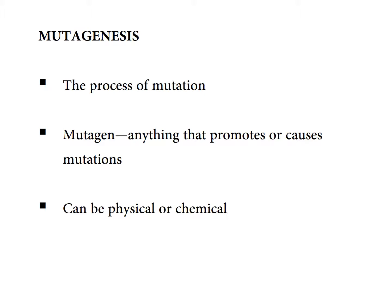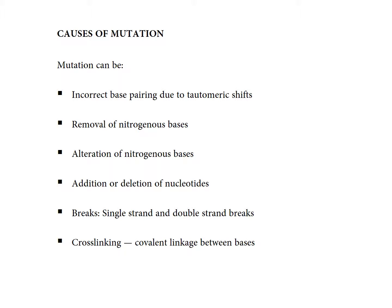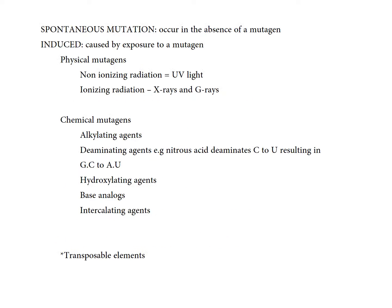That is what we call a frame shift mutation. So what is mutagenesis? Mutagenesis is simply the process of mutation, and a mutagen is anything that can promote or cause mutations. These mutagens can be physical or chemical. Types of mutation events include incorrect base pairing due to tautomeric shifts, removal of nitrogenous bases, deamination of nitrogenous bases, addition or deletion of nucleotides, breaks producing single- or double-stranded nicks in DNA, and cross-linking.